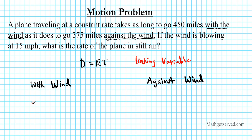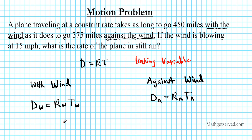Let's write down the formula for both cases. The distance with the wind is: D_W equals R_W times T_W. And the distance against the wind is: D_A equals R_A times T_A — that is, the rate against the wind times the time against the wind.